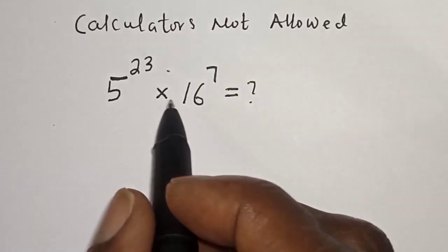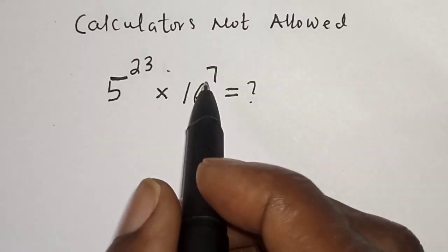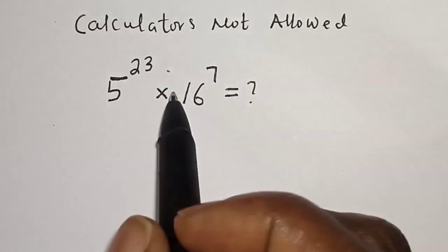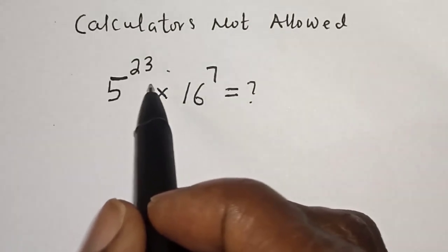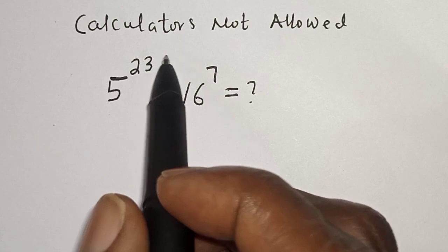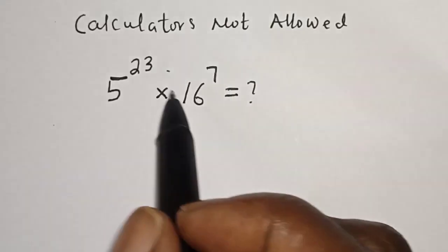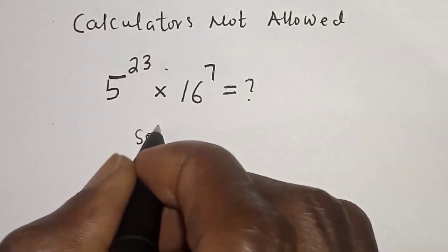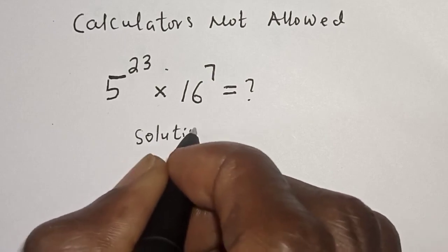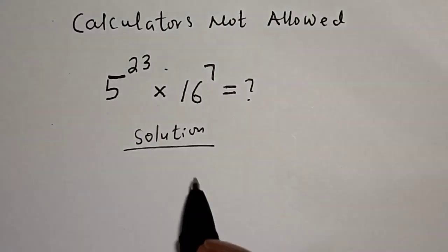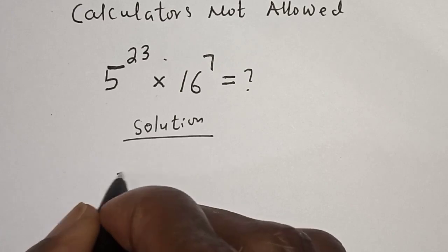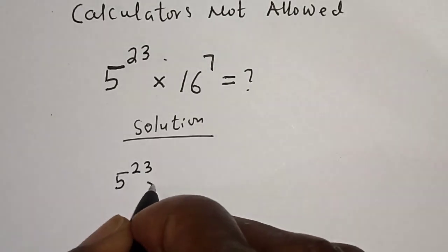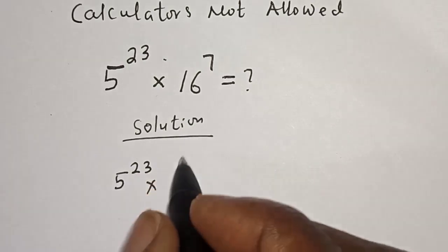5 raised to power 23 multiplied by 16 raised to power 7 is equal to what? Hi everyone, welcome to my class. In this class we want to evaluate this nice math problem, but before we proceed please don't forget to like, share, comment, and subscribe. Solution: we have 5 raised to power 23 multiplied by 16.